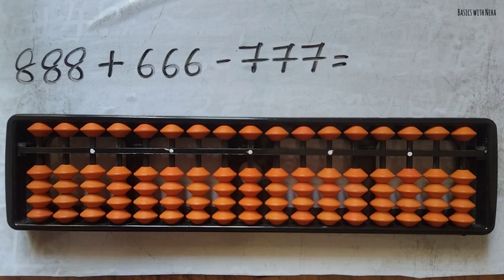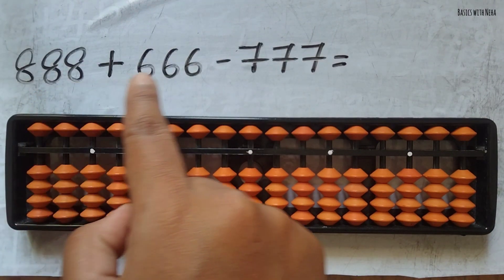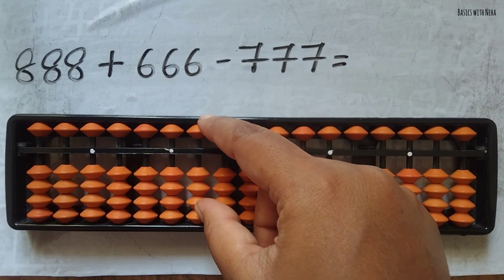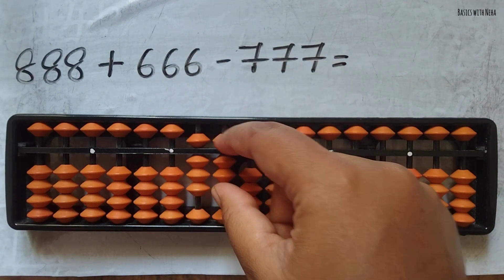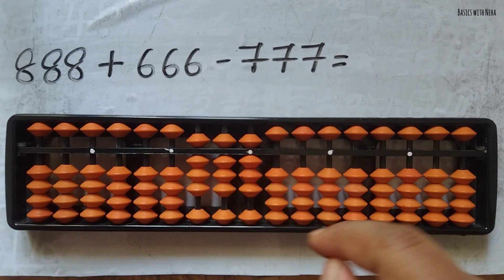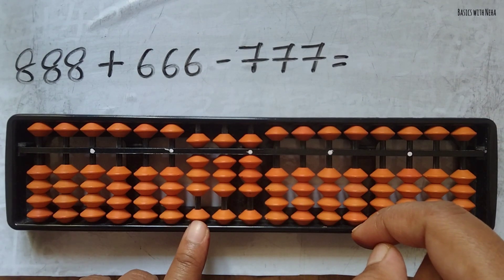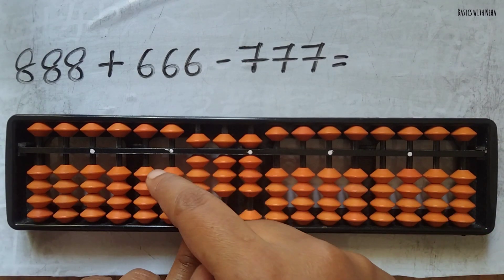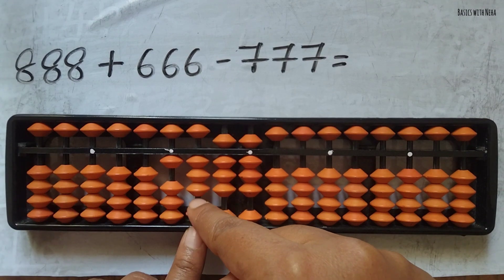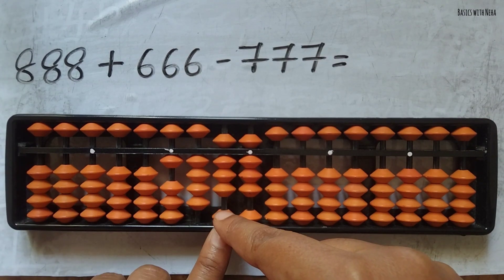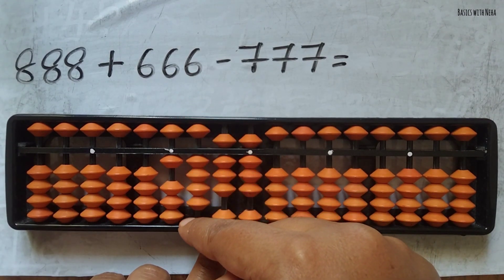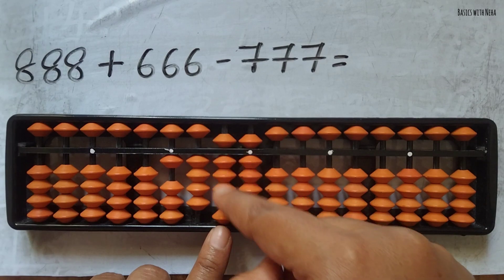The next question: 888 plus 666 minus 777. First take 888. Now to add 666, I have to use the combination formula plus 10 minus 5 plus 1. Again to add the 6 here, we use the combination formula which is plus 10 minus 5 plus 1.